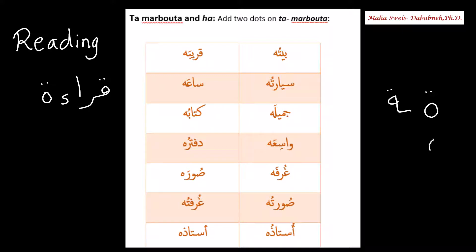If it's ha, just leave it without dots. So again, add two dots to tamar buta. Next step: read all these words. The third step: write down the meaning for each one.